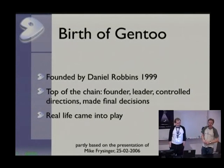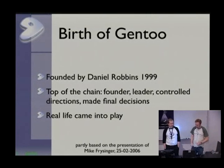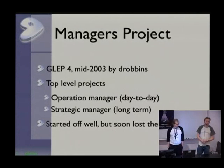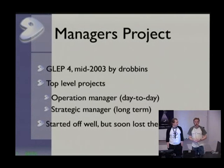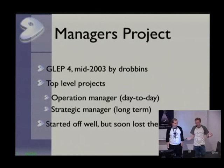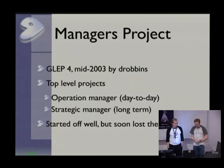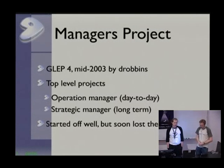Just as a side note, I stole these slides from Mike Freisinger — I changed them a lot, but just to give him credit for the original work. When Daniel was leaving, there was first some sort of a managers' project. Daniel put it in himself, meant to create structure in Gen2 with top-level projects, people under them, an operational manager for day-to-day tasks, and a strategic manager for long-term stuff. It looked very nice and well-defined, but it sort of faded away — most likely because these kinds of structures don't work with volunteer people.